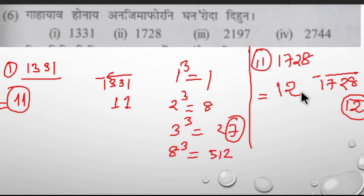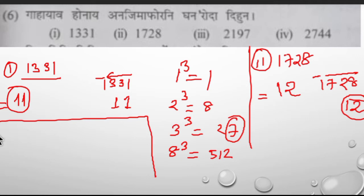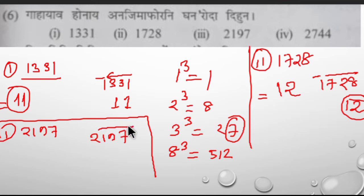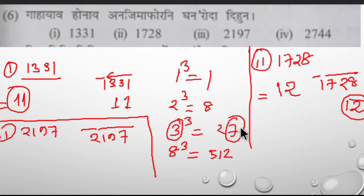Next question is 2197. If you have 2197, you can find the answer in 2197. If you think about the language in 2197, you can find the number.